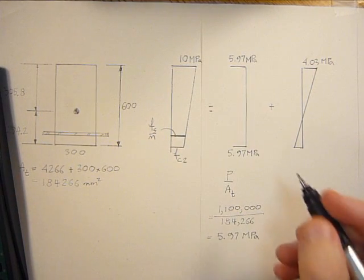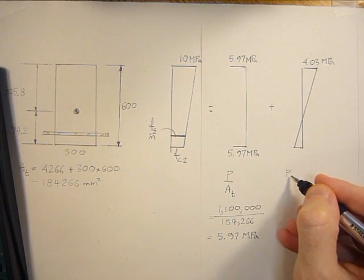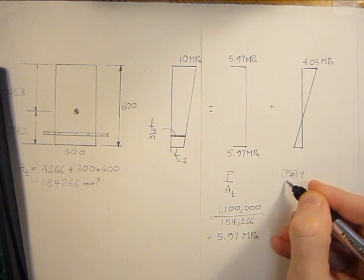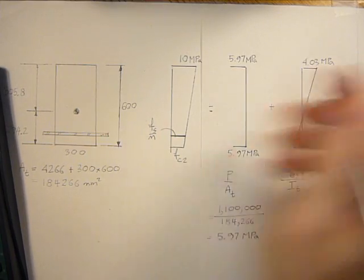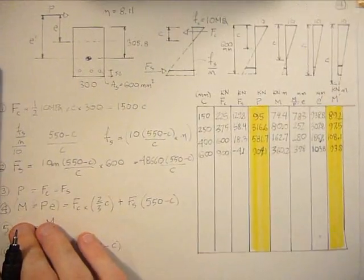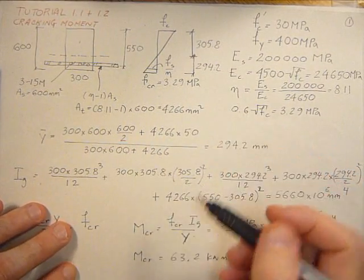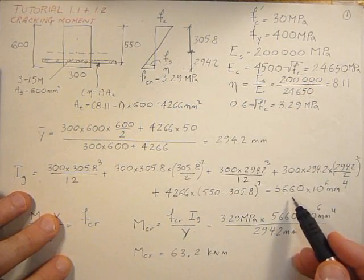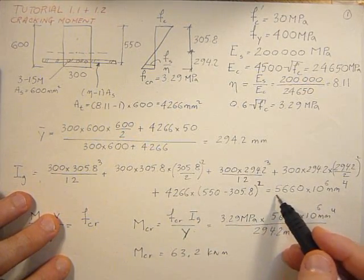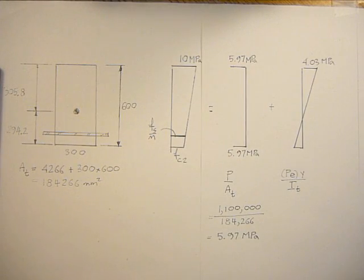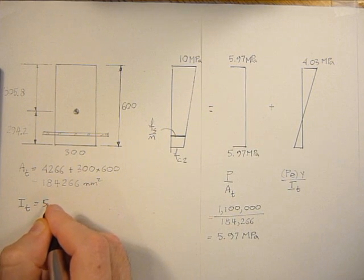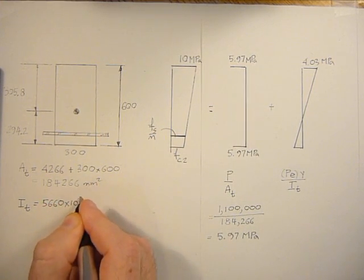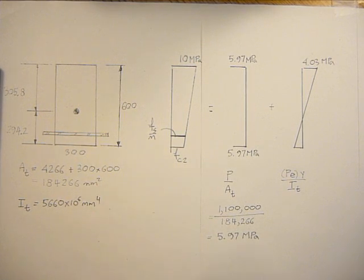And that's really all we need now. Now we know that P E, which is moment, times Y, divided by I transformed, will equal that stress. And we can get the I transformed from in tutorial 1. We calculated, we call it I gross here, but it's really the transformed area of the gross section. So it's 5,660 times 10 to the sixth. I transformed 5,660 times 10 to the sixth millimeters to the fourth.